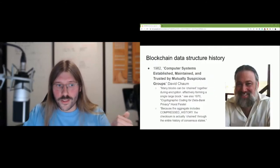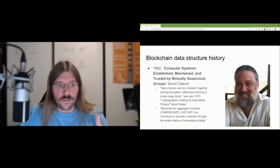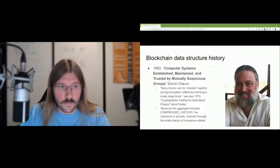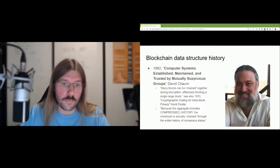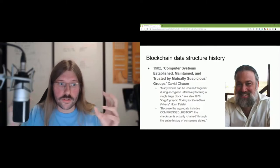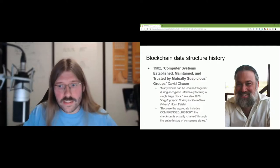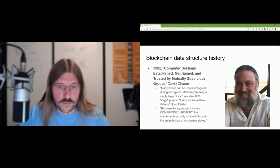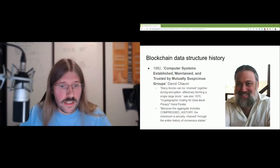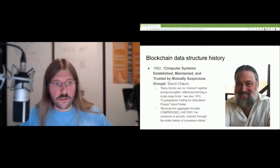Many think Bitcoin is the first time blockchain was invented, but I like to challenge that. In the eighties, David Chaum wrote his dissertation on 'Computer Systems Established, Maintained, and Trusted by Mutually Suspicious Groups,' and he mentions chaining blocks and chaining hashes together. In a certain way, he was already talking about a blockchain data structure. And there's another paper referenced from the seventies from a German cryptographer, also talking about chaining blocks together to make them more secure.